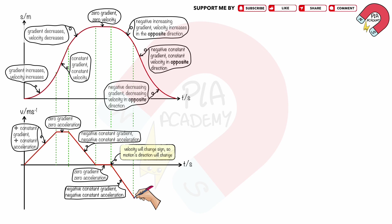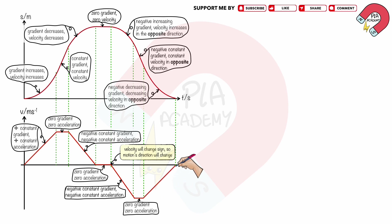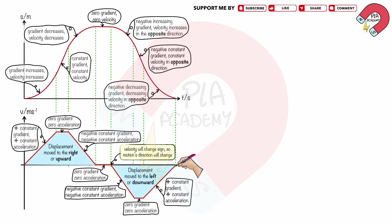This shows that the velocity and acceleration are in the same direction. At the next section, we draw the graph to represent constant velocity in the opposite direction, so the gradient is zero, indicating no acceleration. At the final section, we draw the graph to represent decreasing velocity in the opposite direction at a constant rate, so the gradient is positive and constant, indicating the acceleration is positive and constant. This shows that the velocity and acceleration are in opposite directions. The area under the graph above the x-axis is the displacement moved to the right or upward, and below the x-axis is displacement moved to the left or downward.